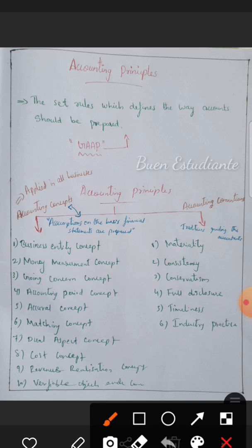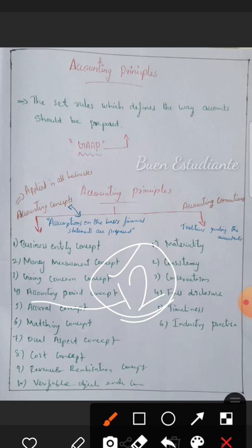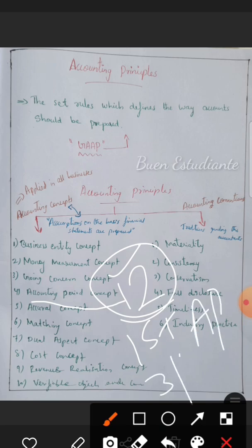The Accounting Period Concept states that although a business goes on for a long time, we divide its life into specific time periods to prepare financial statements and make decisions. We prepare accounts to determine net profit or net loss for each period. The standard accounting period is from 1st April to 31st March.